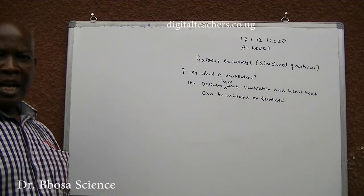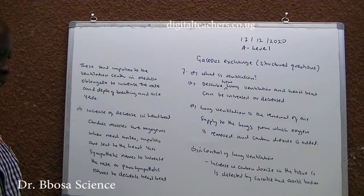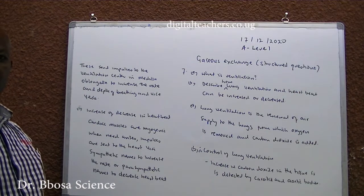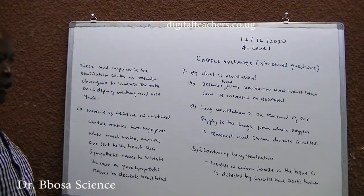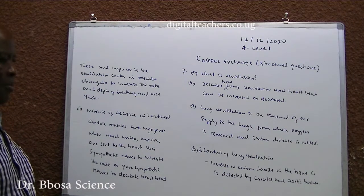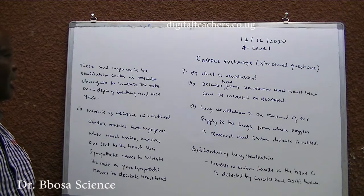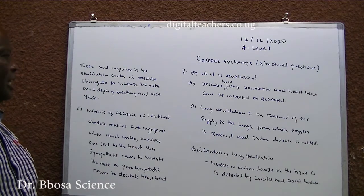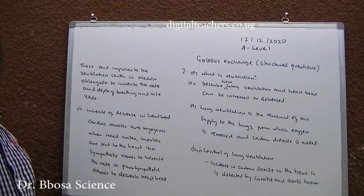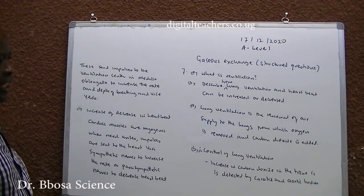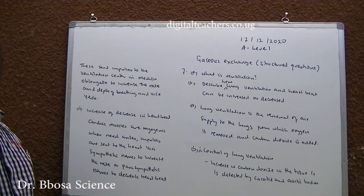You can pause and answer. A: Lung ventilation is the renewal of air supply to the lungs from which oxygen is removed and carbon dioxide is added. B: Control of lung ventilation — increase in carbon dioxide in tissue is detected by carotid and aortic bodies. These send impulses to the ventilation center in the medulla oblongata to increase the rate and depth of breathing, and vice versa. When carbon dioxide levels fall, impulses are not sent to the brain, so the rate and depth of breathing is reduced.